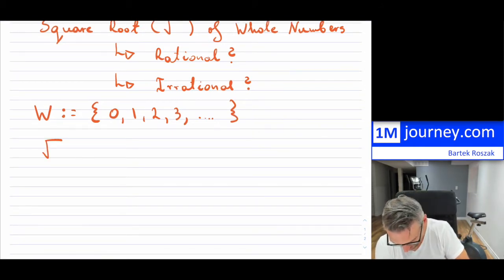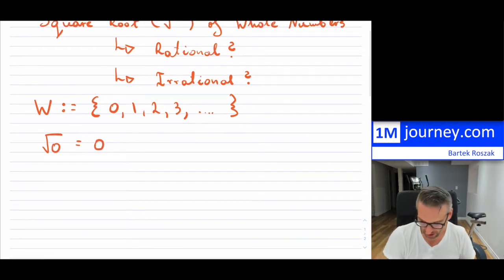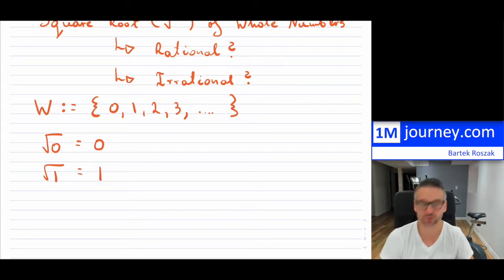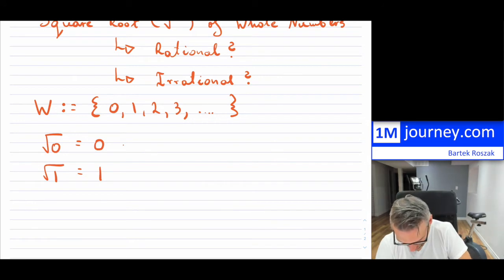So if you take the square root of 0, you're going to get 0. So obviously 0 is a rational number. We can certainly write it as a fraction. So that's that. Now, we can keep going. So let's say square root of 1, and we're going to be assuming we're taking the positive of the square root and not necessarily the negative, okay?